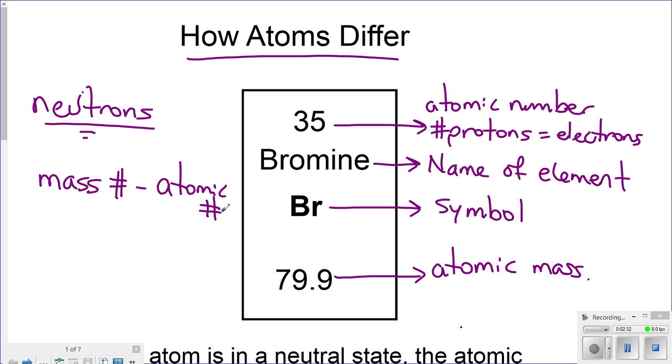Therefore, like I said just now, the mass number minus the atomic number, or the atomic mass minus the atomic number, gives me the number of neutrons.